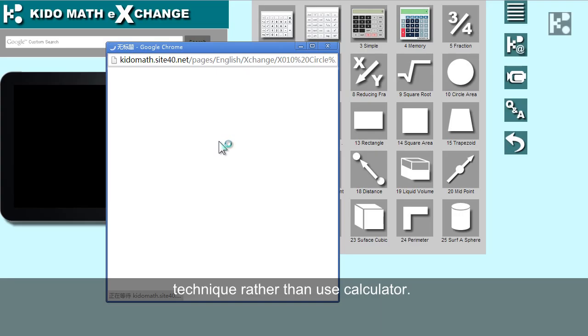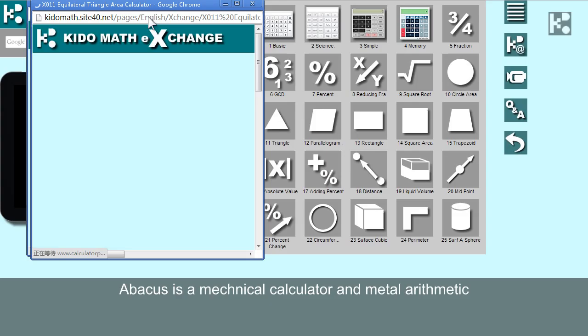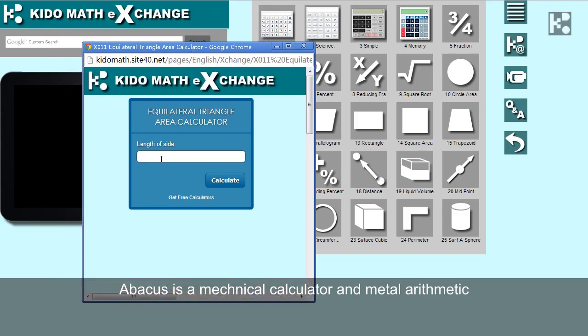Actually, both abacus and mental arithmetic are calculators. Abacus is a mechanical calculator, and mental arithmetic is a human flesh calculator.